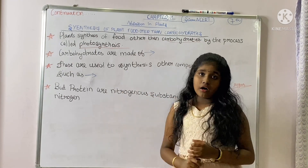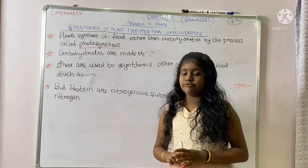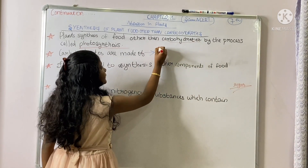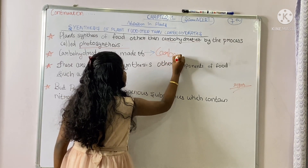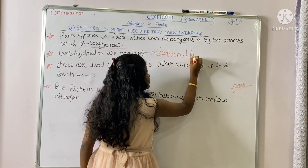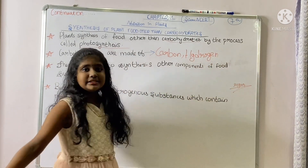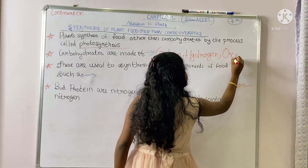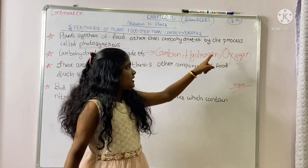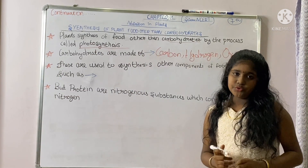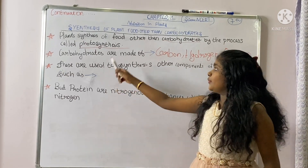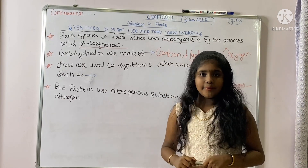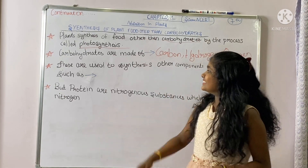Carbohydrates are broken down into — or made of — carbon, hydrogen, and oxygen. This is very important for your exams. So carbohydrates are made of carbon, hydrogen, and oxygen.